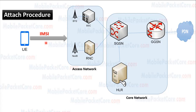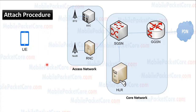At the end of the attach procedure, the network will send a temporary identifier to the UE. This temporary identifier is called the PTEMC. In the future, when the UE makes an attach procedure to the network, the UE will send its PTEMC to the network as its identifier, instead of its IMSI.